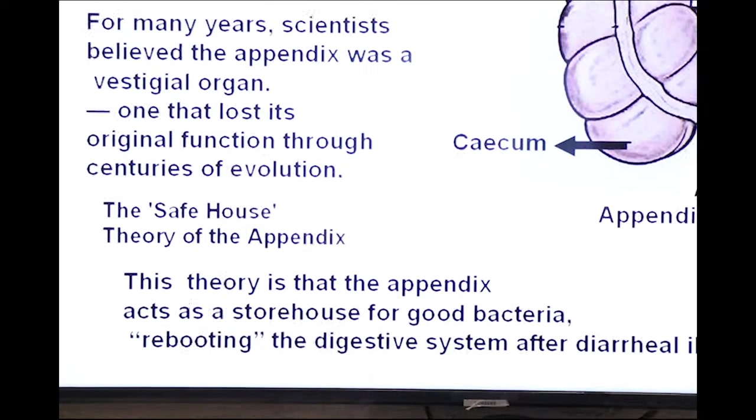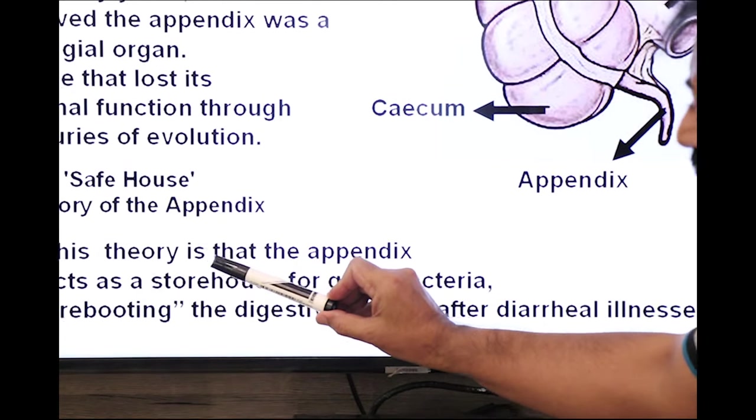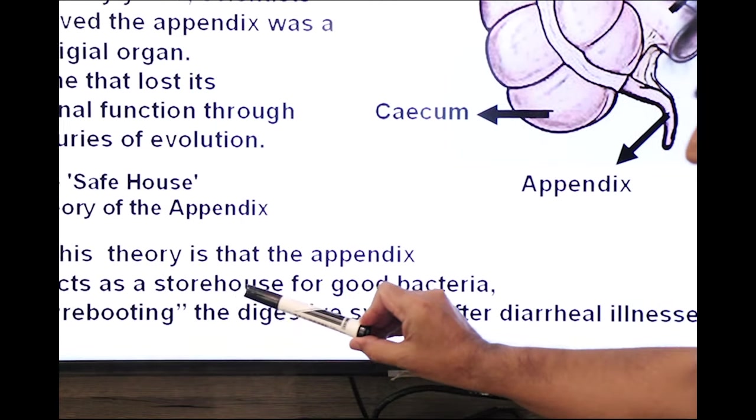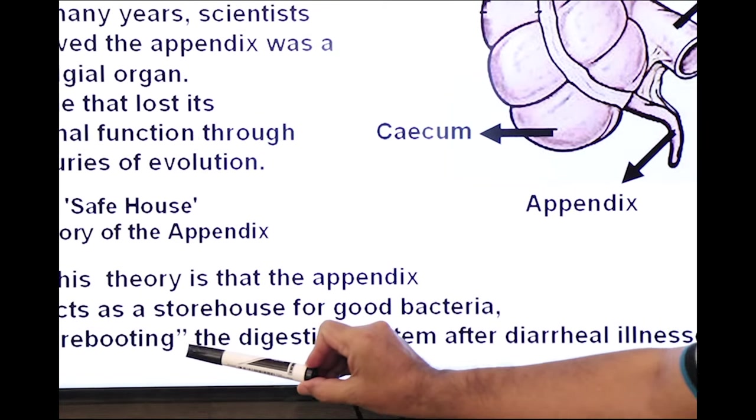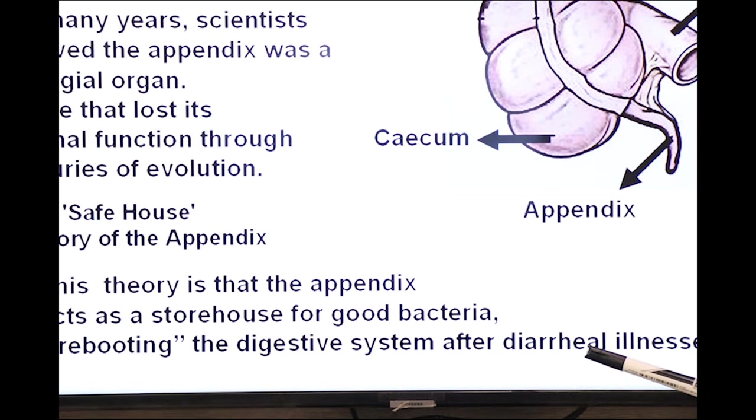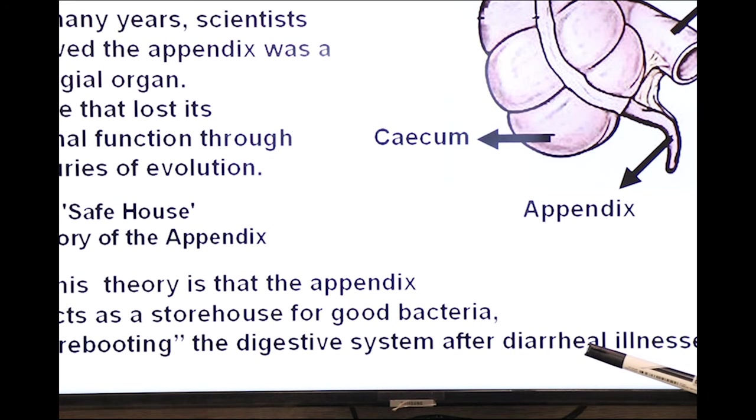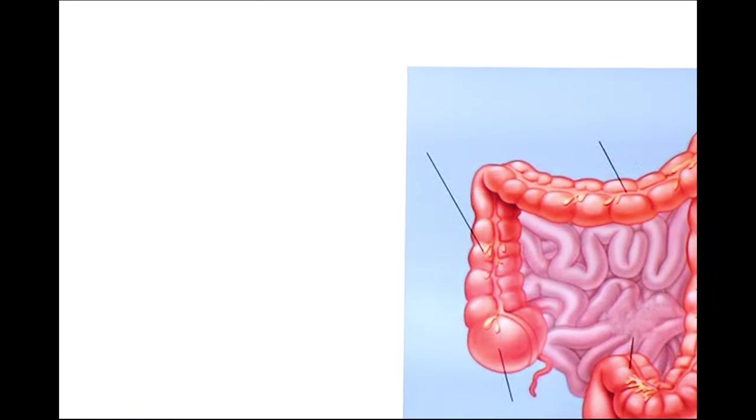This is safe house theory of appendix. What do you mean by safe house theory of appendix? This theory is that the appendix is a storehouse for good bacteria, useful bacteria, rebooting, reloading the digestive system after diarrheal illness. So it reloads useful bacteria into intestine. This is new theory about the function of appendix.